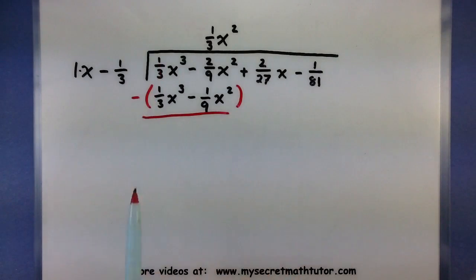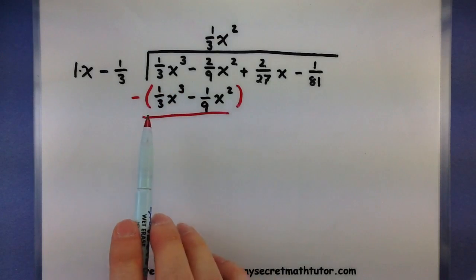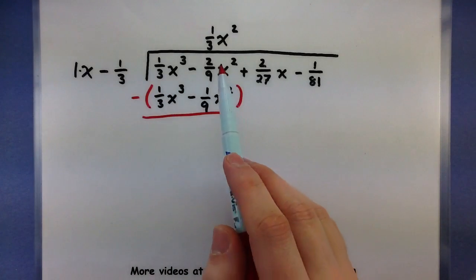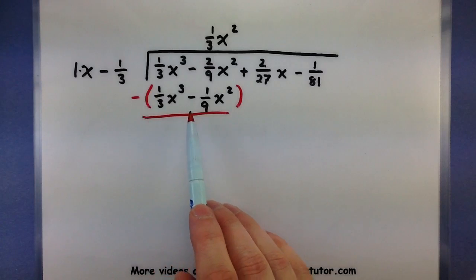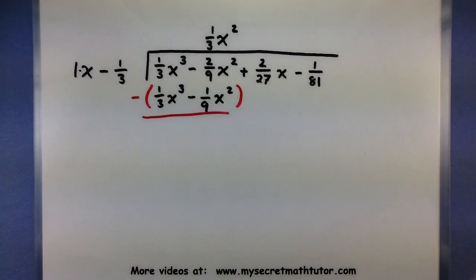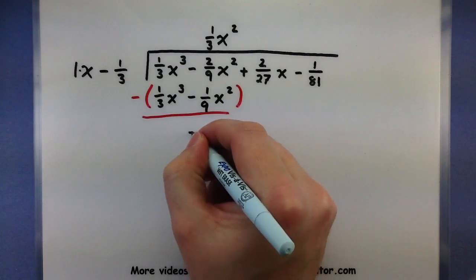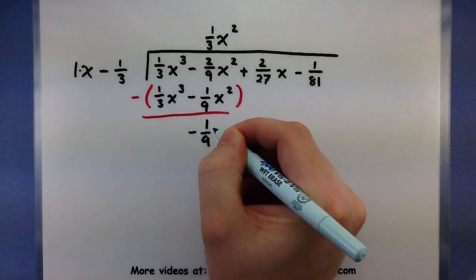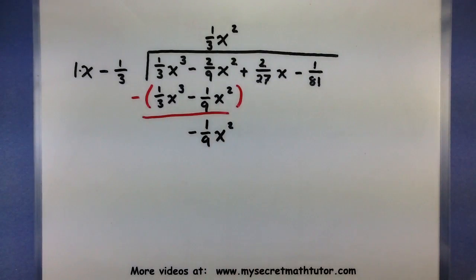So, these first two should always cancel each other out — looks like we're doing just fine. So, 1/3 x³ minus 1/3 x³ cancels. Then I have negative 2/9 minus negative 1/9, which is like adding 1/9. So, negative 2/9 plus 1/9, I would just have negative 1/9 left. Both x squared terms accounted for. I guess that wasn't too bad.